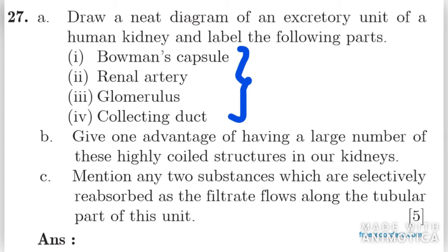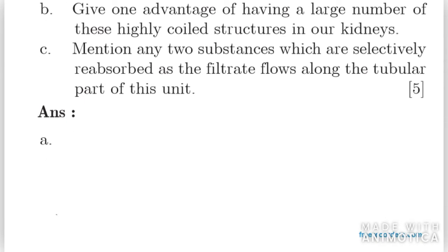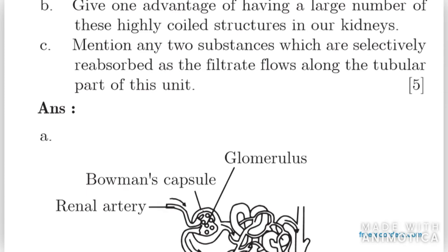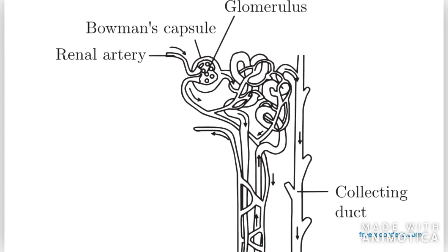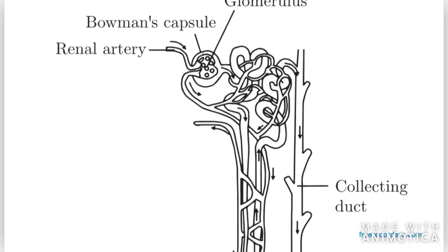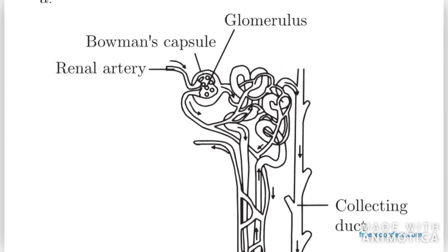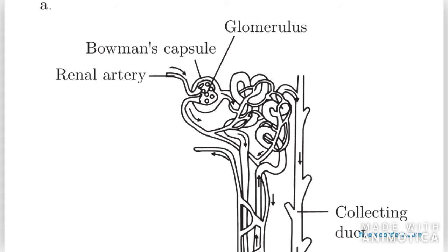Question number 27: you have to draw a neat diagram of an excretory unit of a human kidney and label the following parts — Bowman's capsule, renal artery, glomerulus, and collecting duct. In the diagram, the collecting duct is on the side, Bowman's capsule is at the top/start, the renal artery is at the beginning, and the small particles inside it are known as glomerulus.